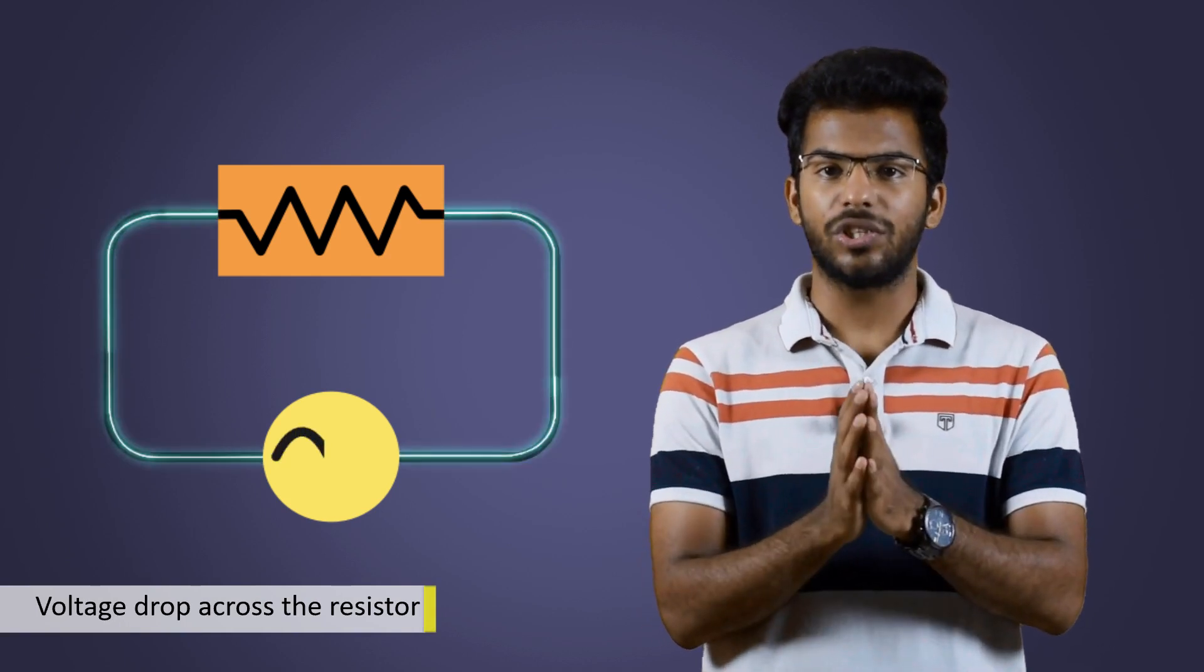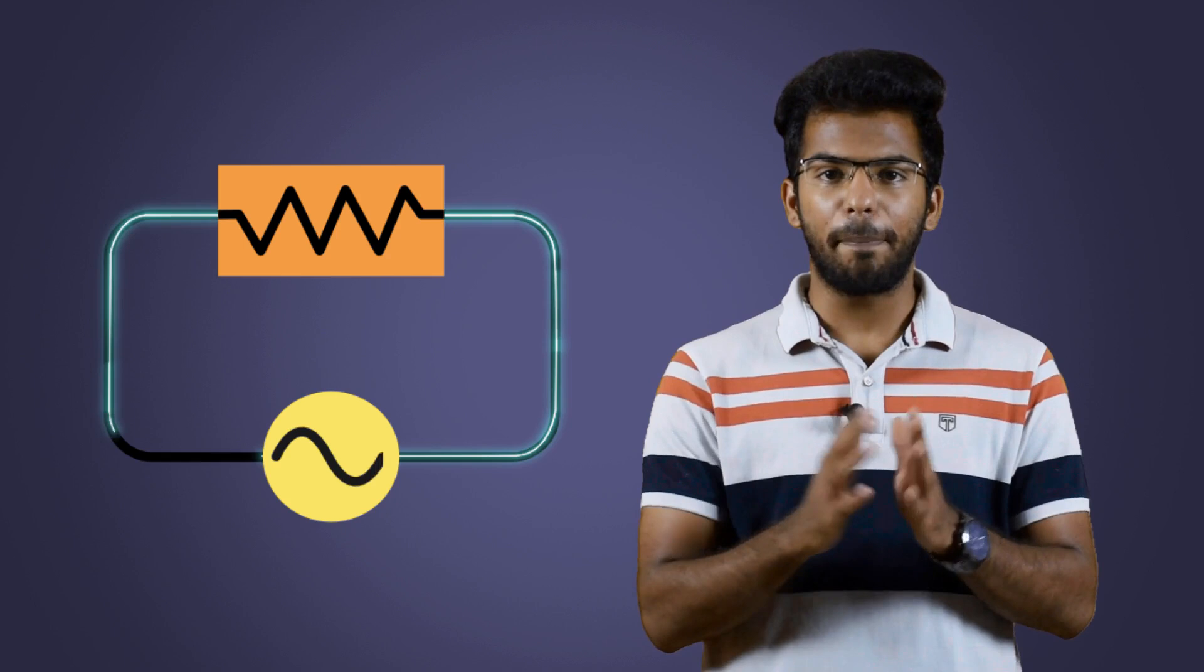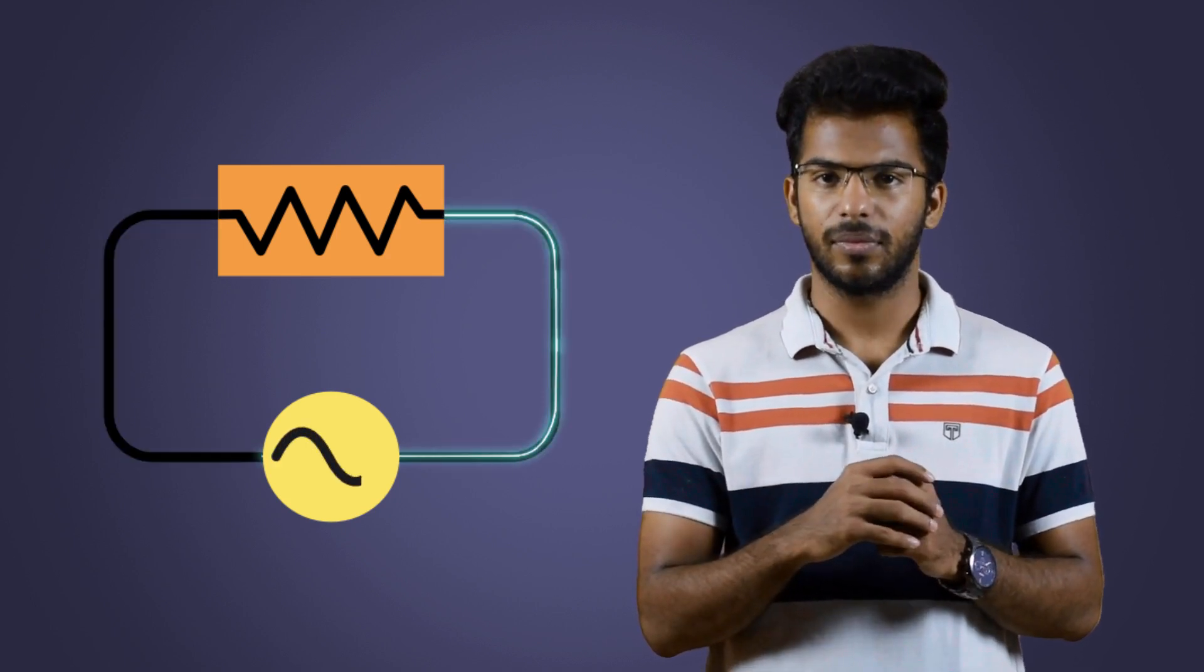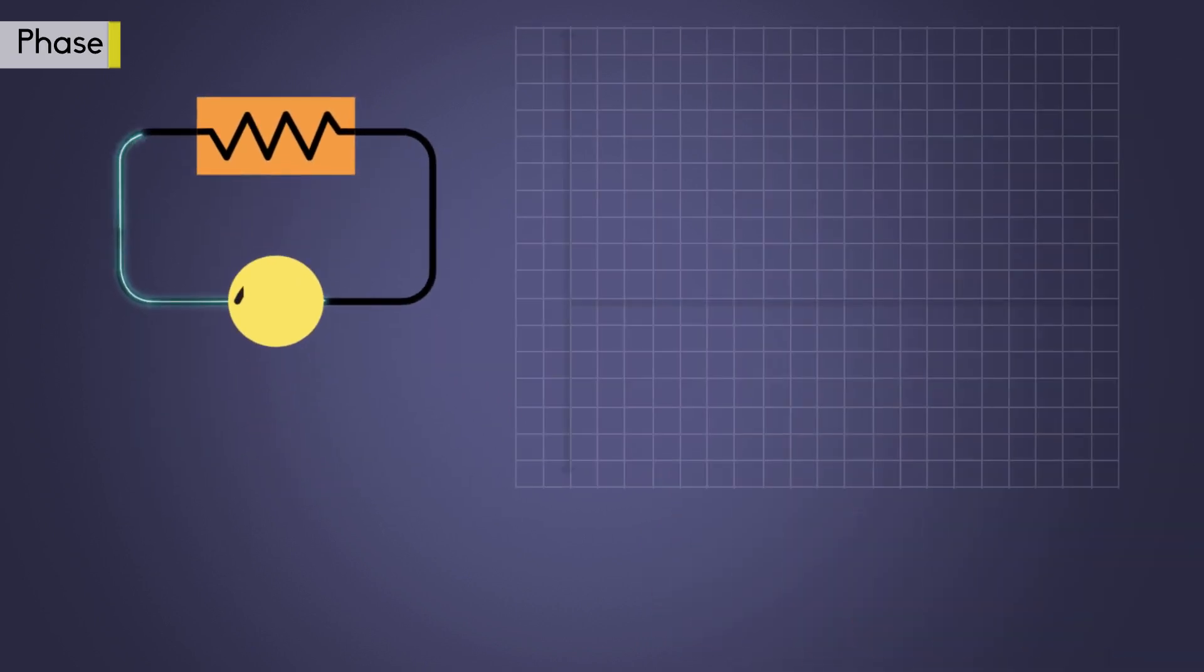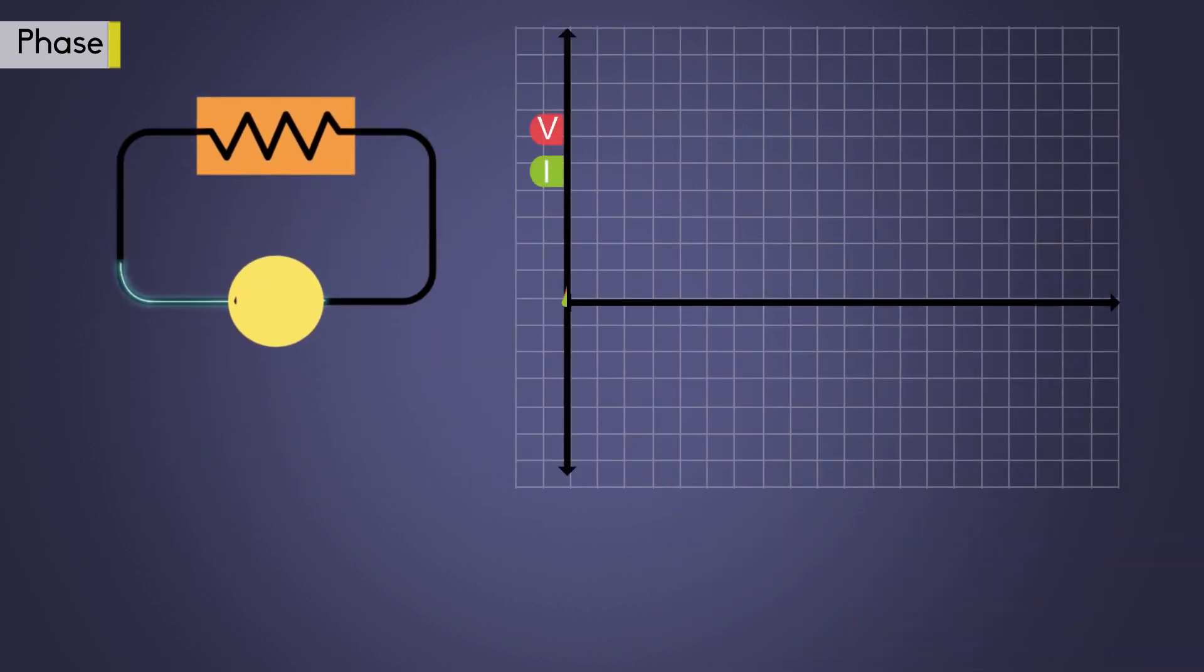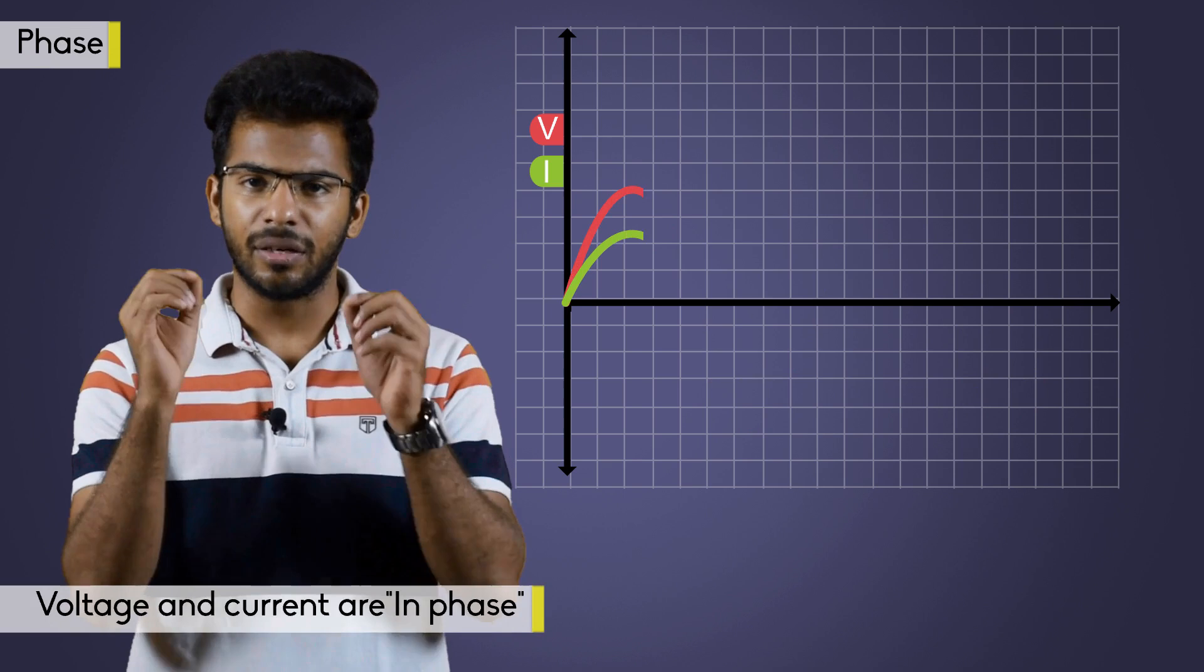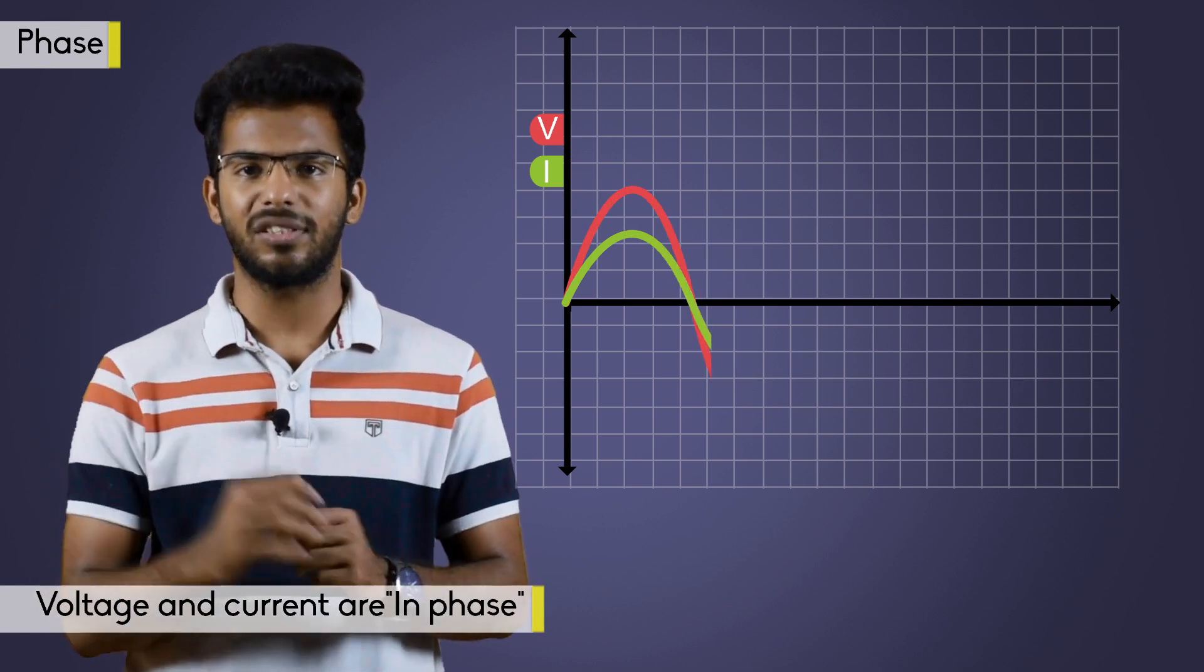The current and voltage will be in sync when they pass through a circuit which has only resistance. We call this sync as phase. When we look at the sine waves of voltage and current of a pure resistive circuit, it will be like this. The current and voltage are in perfect harmony. This means the voltage and the current are in phase in pure resistive circuit.